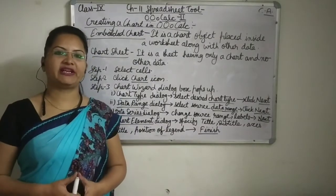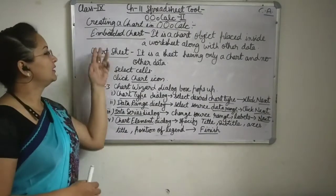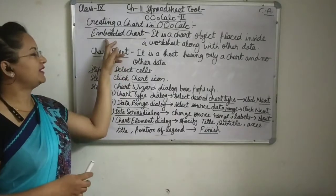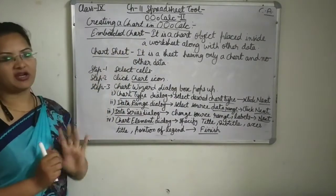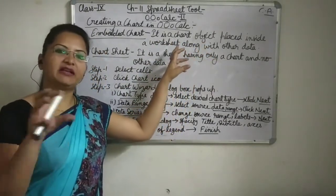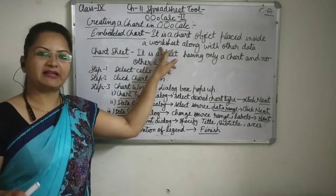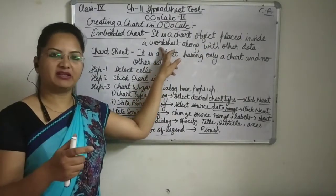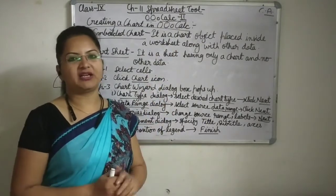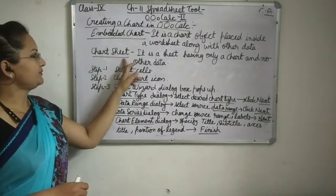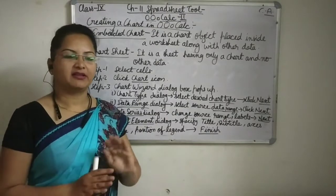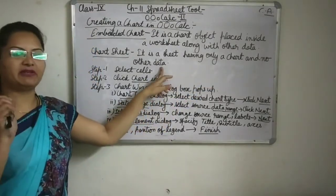Now students, we will learn to create a chart in OpenOffice Calc. Before that, we should know different ways in which we can make the chart. There can be an embedded chart or a chart sheet. In embedded chart, the chart object means the chart will be there near the data values — both the table and the chart will be in the same sheet. Chart sheet means it is the sheet having only the chart — the chart data meaning the table will not be there.